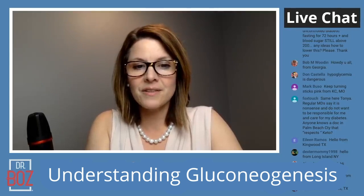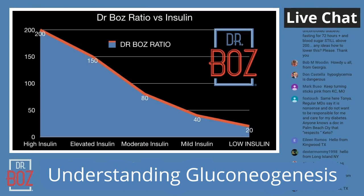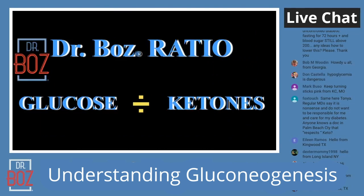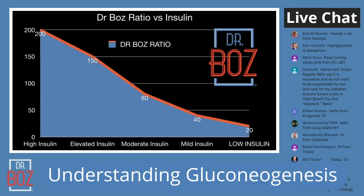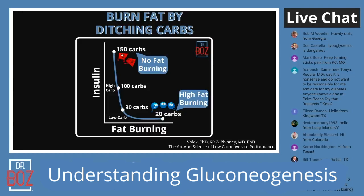This graph shows the Dr. Boz ratio, where you take blood glucose and divide it by ketones. We want the Dr. Boz ratio to be less than 80 for weight loss, and less than 40 when working on the immune system.